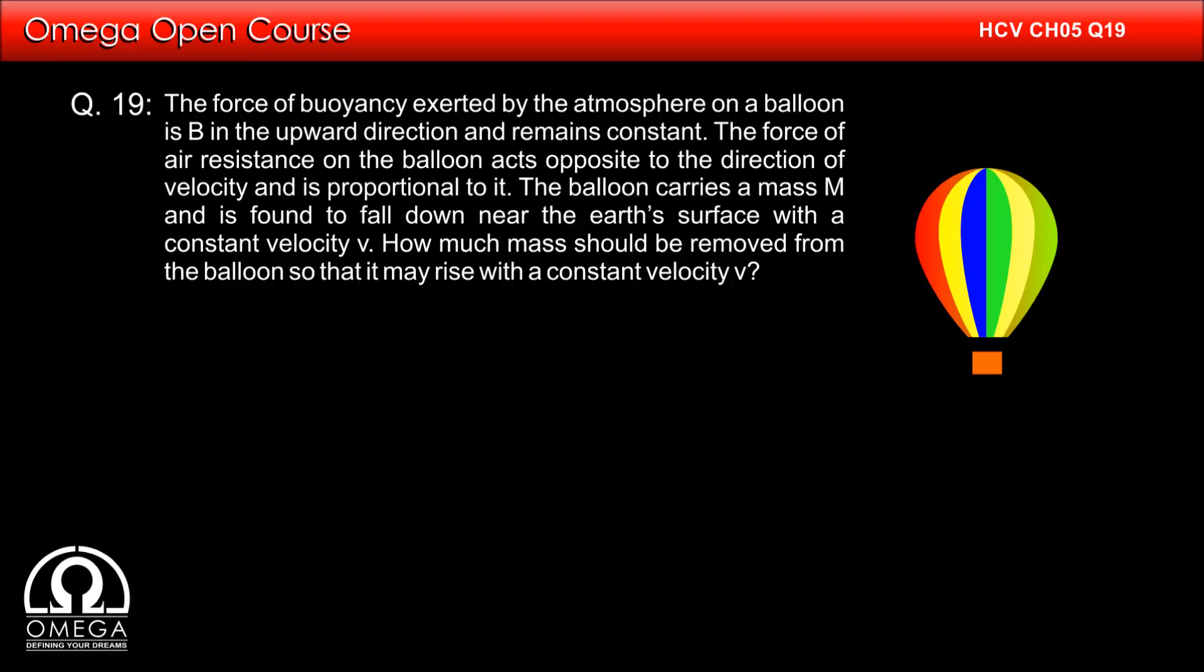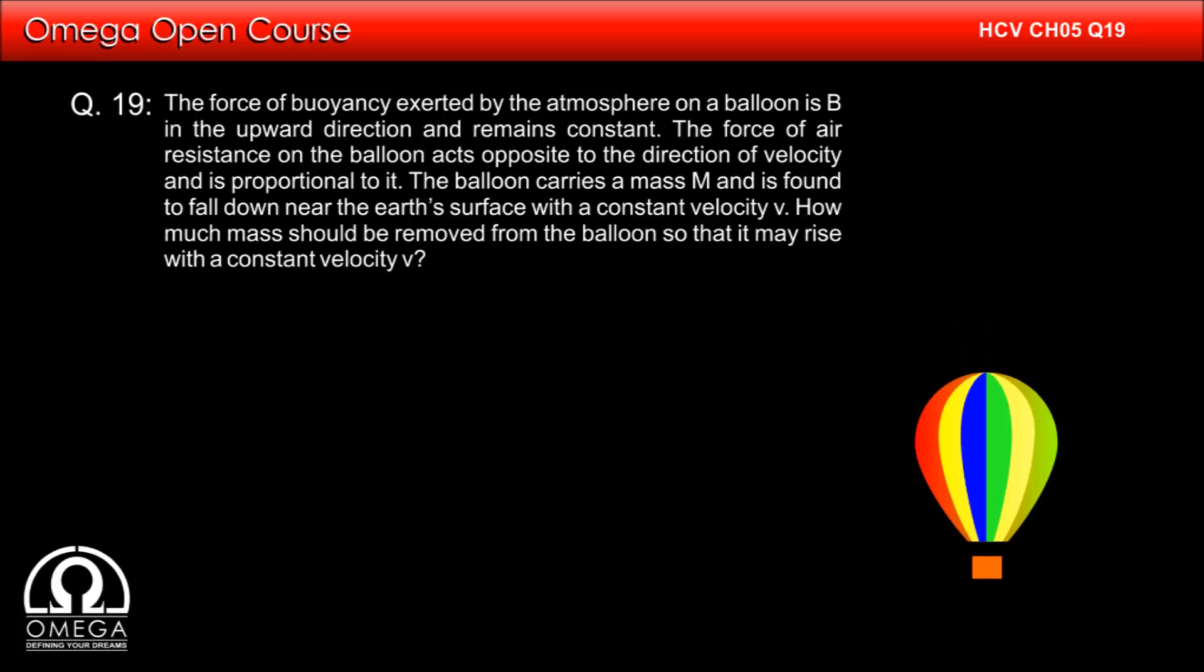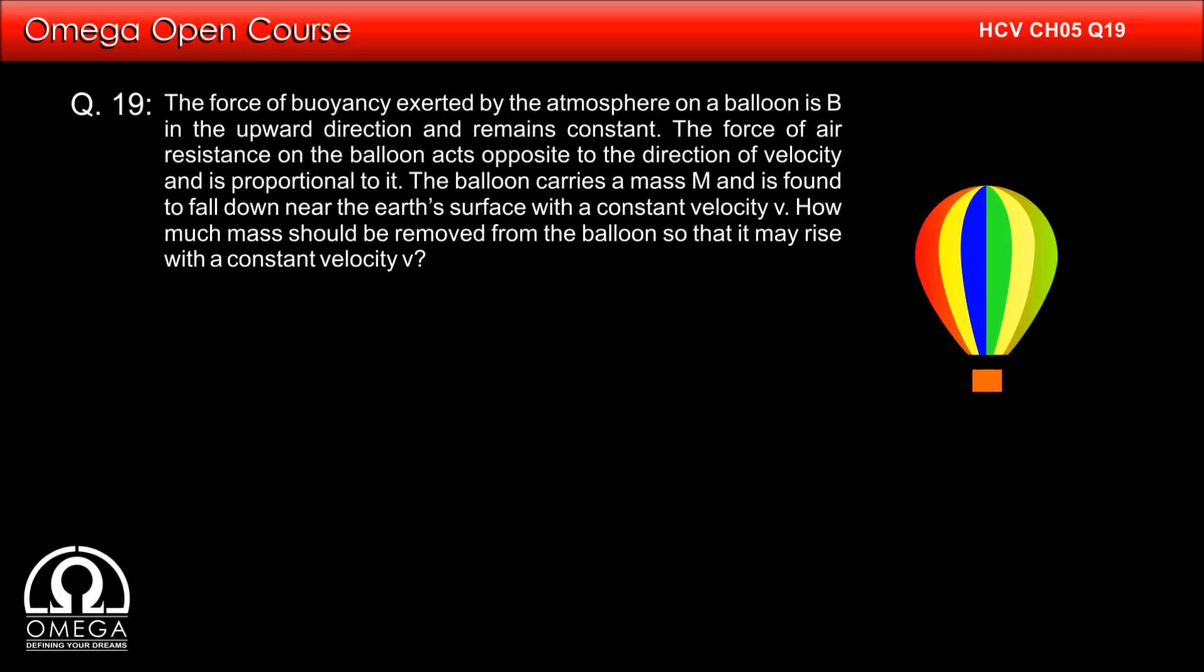The force of buoyancy exerted by the atmosphere on a balloon is B in the upward direction and remains constant. The force of air resistance on the balloon acts opposite to the direction of velocity and is proportional to it. The balloon carries a mass M and is found to fall down near the earth's surface with a constant velocity V. How much mass should be removed from the balloon so that it may rise with a constant velocity V?